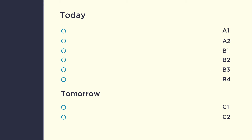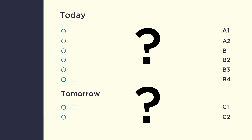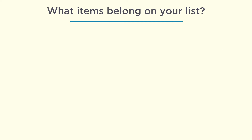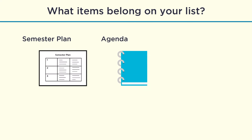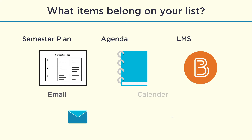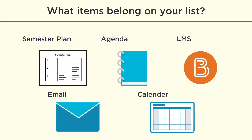First, you need to figure out what items belong on your list. Where can you find this information? Depending on your situation, you may need to refer to your semester plan, your agenda, your learning management system like Brightspace or Blackboard, your college email, and calendars at home.